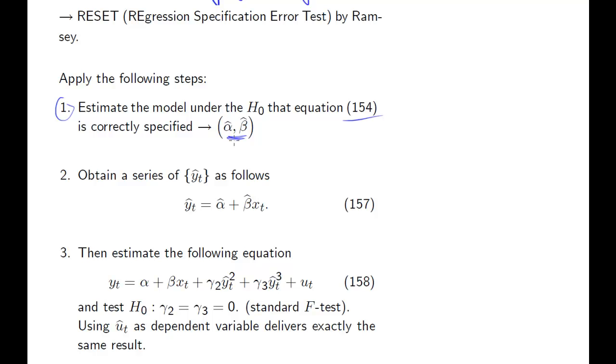Now slightly different to our usual auxiliary regression approach, what we need to do next in the next step is we calculate our predicted value for y. So these are the predicted values, and of course you know how to calculate these: alpha hat plus beta hat times x_t, the expected values for y_t. So then now we have a series of y_t hat.